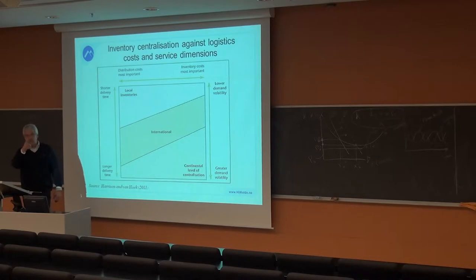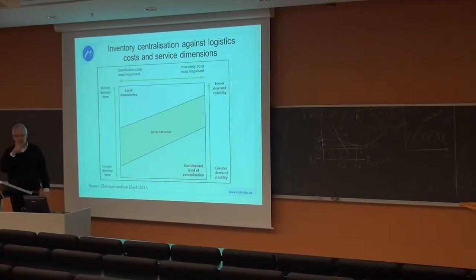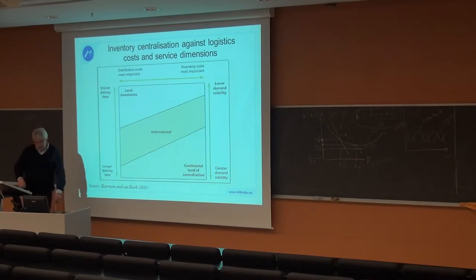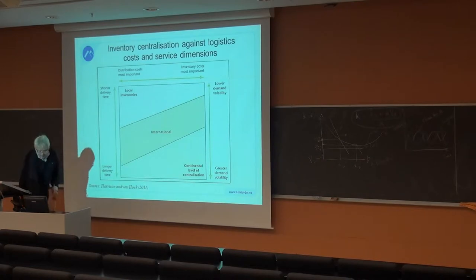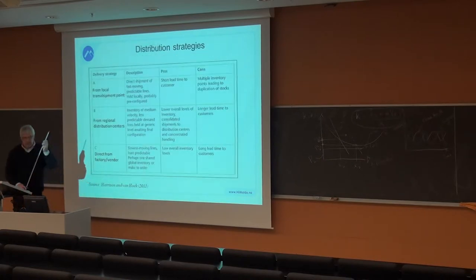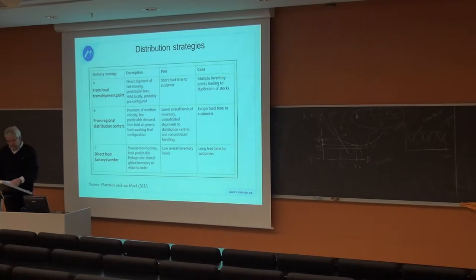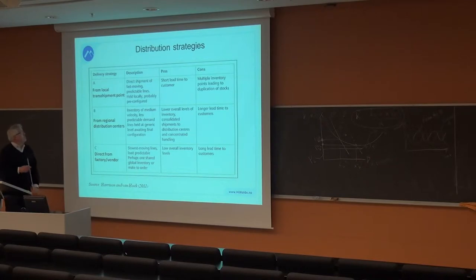The red light is on. We continue. Distribution strategies. There are basically three main delivery strategies called A, B, and C here.